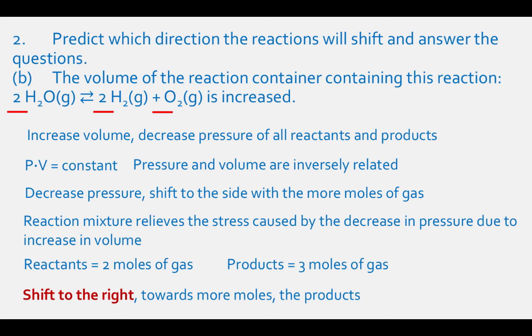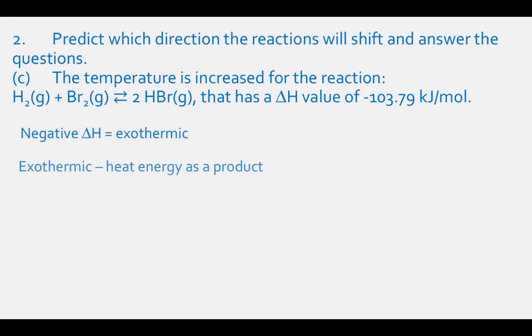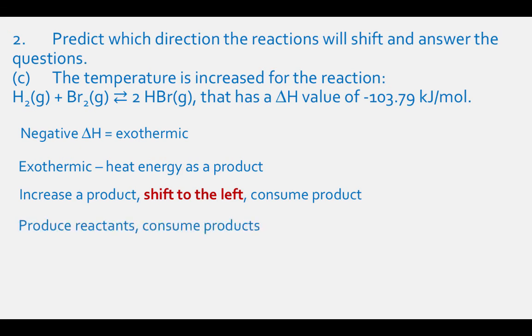For part C, if we increase the temperature for the reaction with the negative delta H value, we have an exothermic reaction. Exothermic reactions have heat energy as a product. If we increase a product, then we need to shift the reaction to the left in order to consume the heat energy. We will produce some reactants and consume some products.